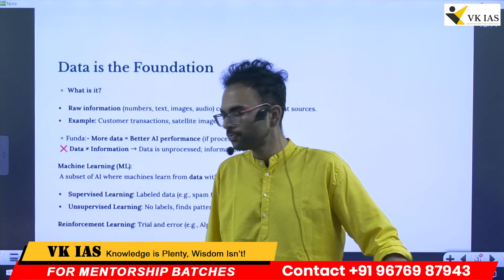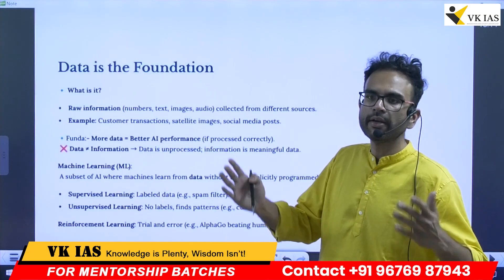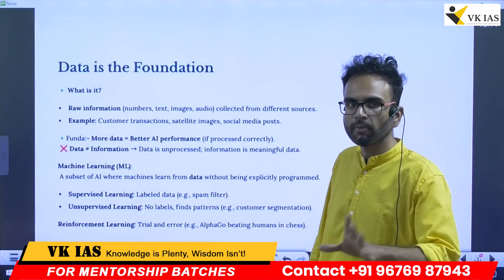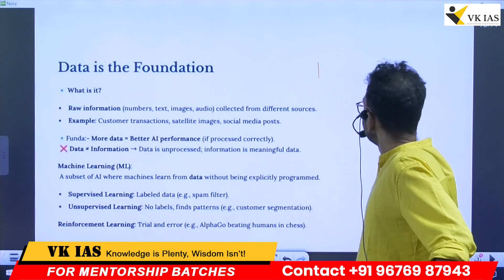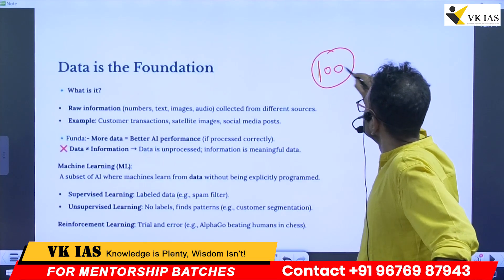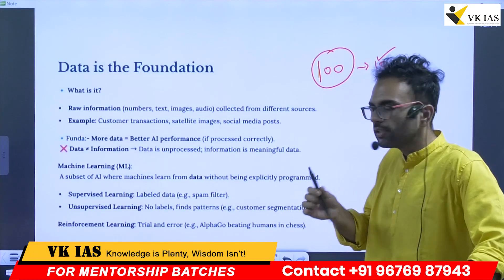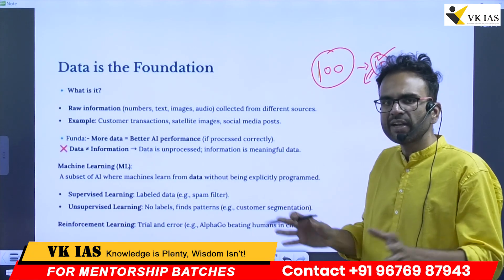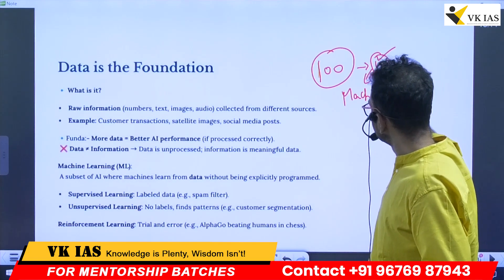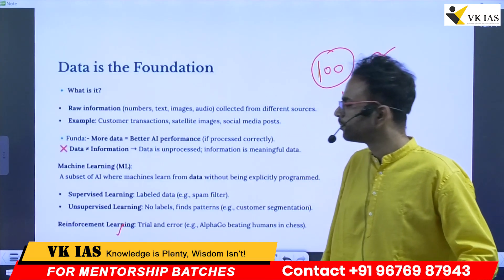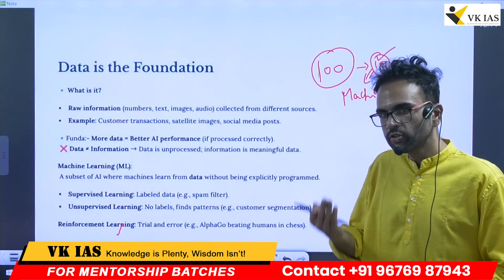Unsupervised learning represents a higher level of sophistication. Reinforcement learning is where you give every possible probability — out of, say, a hundred trials, ten will click. You take those ten successful trials and simulate that set of conditions again and again so that the machine learns through repetition. That is called reinforcement learning. These are the basic terminologies you might get at the prelims level.